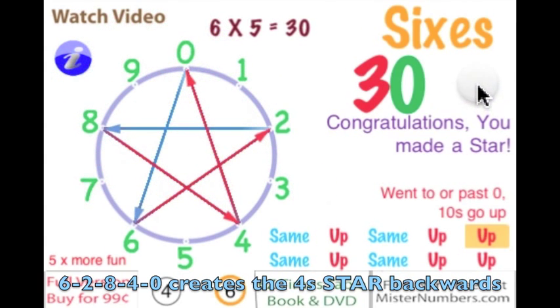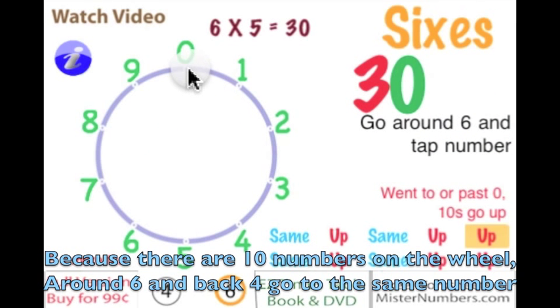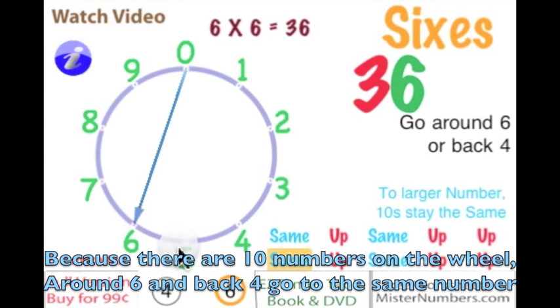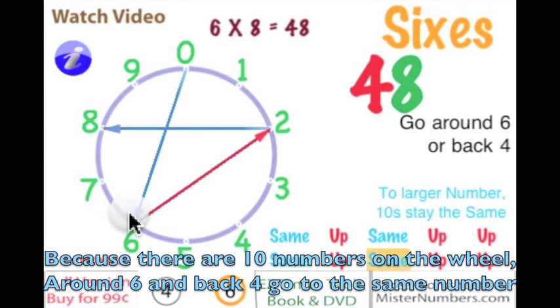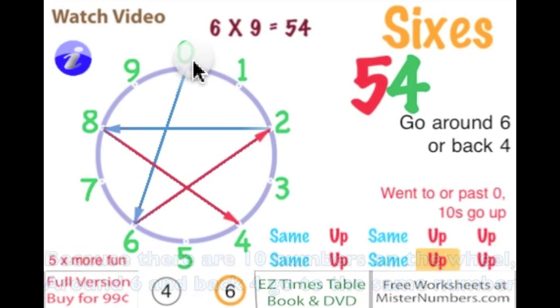The 4s and 6s make the same thing. Let's go around again. Now notice when you go around 6, it's the same thing as going back 4. So if we go back 4, we're going to 2, then to 8, then to 4, then to 0.